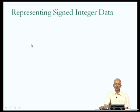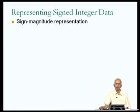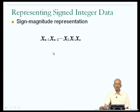The problem is: I need to represent values which may be either positive or negative. One way to do this is to use something called the sign-magnitude representation. The idea here is that if I have an n-bit representation for a single integer, there are n bits: x_{n-1}, x_{n-2}, right up to x_0.